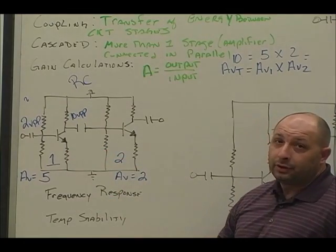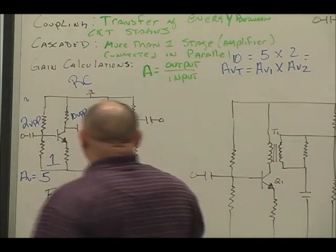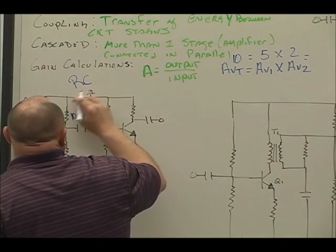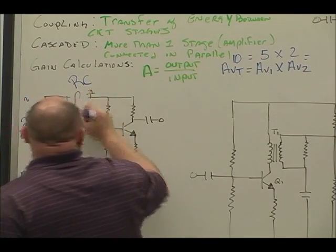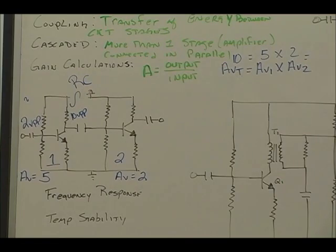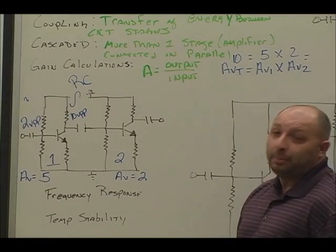So ten volts peak to peak is my expected voltage gain. This output is the input to the next stage. So if I were to draw my signal here, two volts peak to peak, in comparison this output would be larger, and there's going to be a phase shift. Yes, there is!